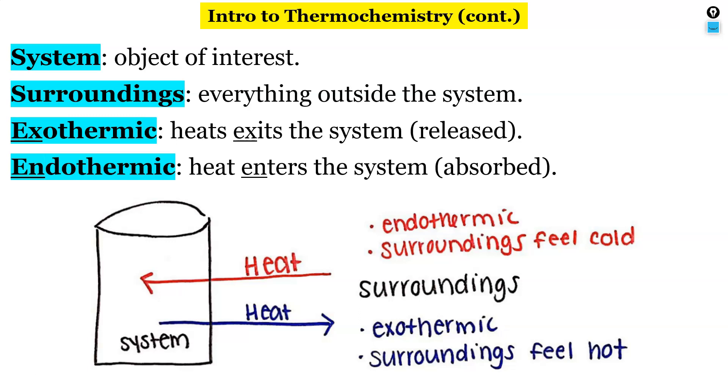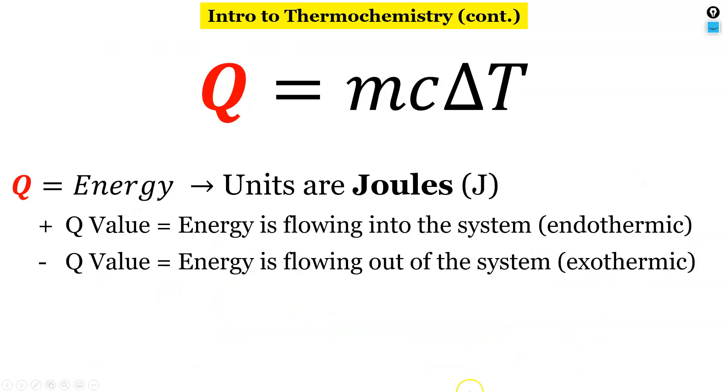So here is an equation that we're going to use frequently with thermochemistry, and that is Q equals mc delta T. If we have a positive Q value that means energy is flowing into the system, it's an endothermic reaction. If we have a negative Q value energy is flowing out of the system, it's going to be exothermic. The units that we use for energy are joules.